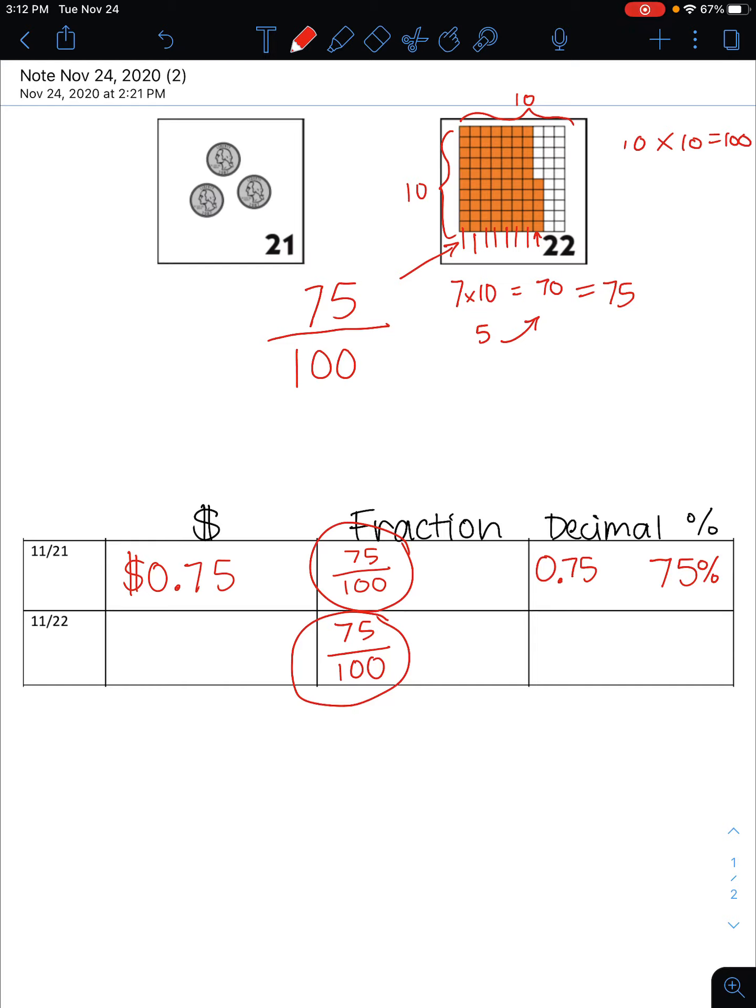That's a good hint that my money, decimal, and percentage format will be the same. 75 hundredths is exactly the way we would write this decimal. And finally, I can look at this fraction, 75 hundredths, as being 75 cents out of a total 100 cents or a dollar. And that gives me my money format of zero dollars and 75 cents.